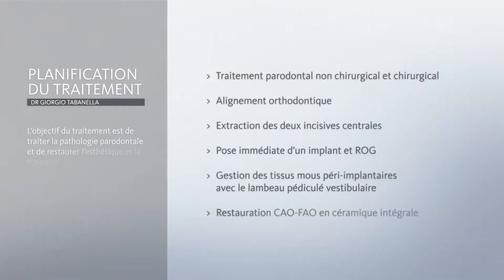First, we need to eradicate periodontal disease, then we're going to perform orthodontic realignment, extraction of both central incisors, immediate implant placement, and then we're going to boost the peri-implant mucosa by using the buccalpedical flap.